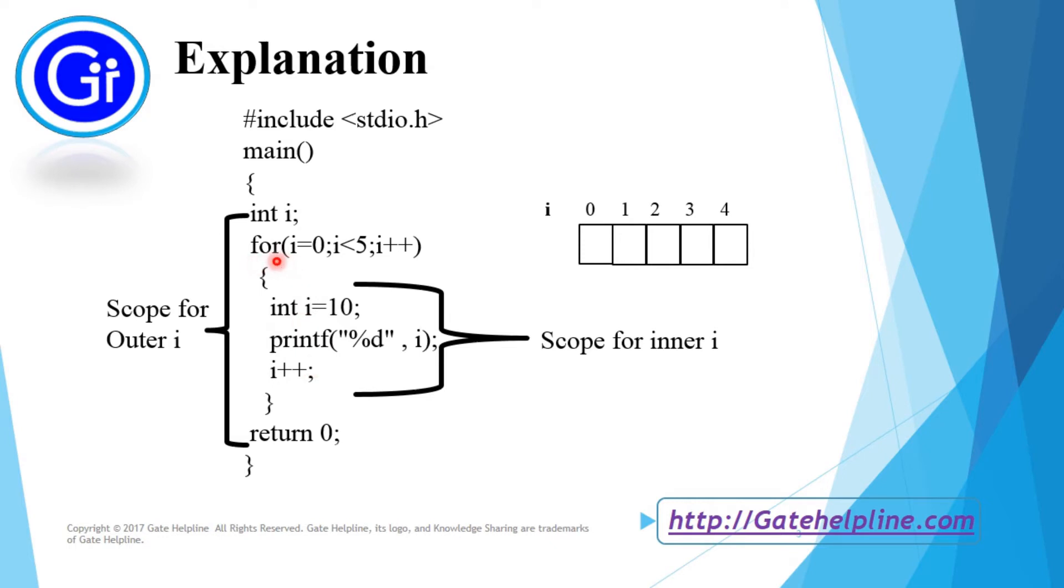Now we will see how this for loop will work. For this we had taken this representation and we will see the value of i throughout 0, 1, 2, 3, 4 means 5 iterations. What will be the value of i which this loop is going to print at this condition.